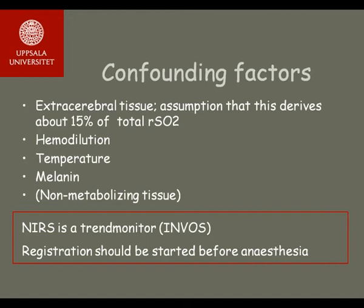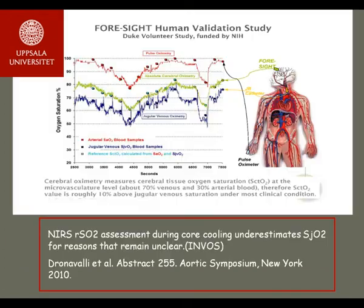In several experimental studies there is a correlation between brain saturation and O2 saturation in the jugular bulb. However, this is not a constant finding, and results from other studies have demonstrated variations in these values and limited correlations.